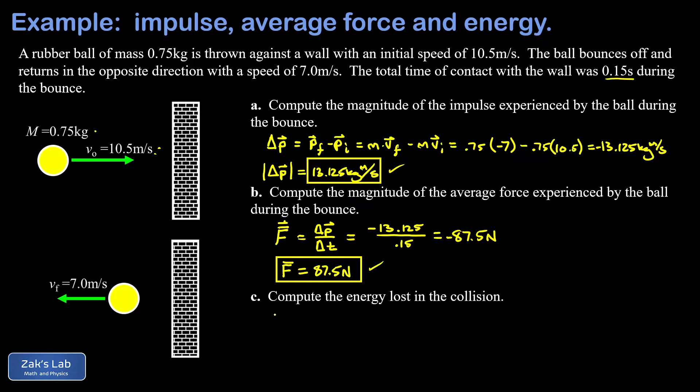All we have to do is compute the initial and final kinetic energy and take the difference. Our initial kinetic energy is one half times the mass times the initial speed squared. We plug in the numbers and we get an initial energy of about 41.3 joules.